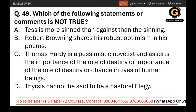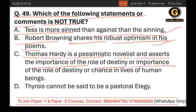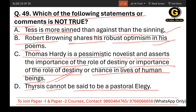Question 49: Which of the following statements is not true? Tess is more sense than against than the cynic — correct. Robert Browning shares his robust optimism in his poems — correct. Thomas Hardy is a pessimistic novelist who asserts the importance of destiny or chance in human lives — correct. The statement that Lycidas cannot be said to be a pastoral elegy is not true — Lycidas is a pastoral elegy, dedicated to Arthur Hugh Clough. So D is the correct answer.